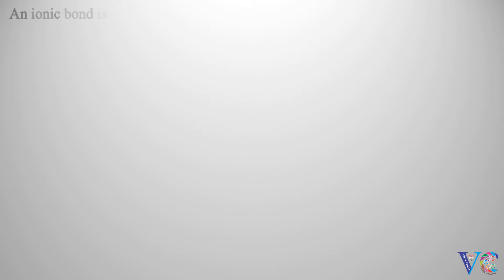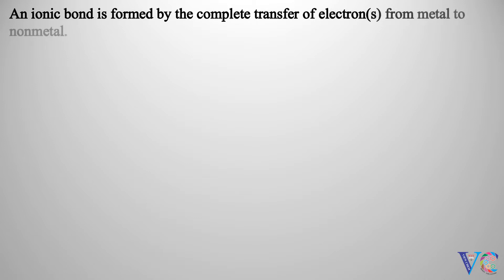An ionic bond is formed by the complete transfer of electron or electrons from metal to nonmetal. Sodium metal loses an electron while fluorine atom gains an electron.